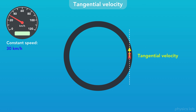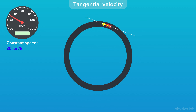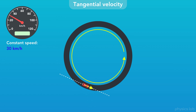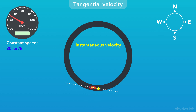You might also hear this referred to as the linear velocity of an object in circular motion, because we're describing the object's velocity along this tangent line at a given instant. From the car's point of view, its motion is being described as if the circular path was straightened out into a line. So while it's fair to say that the direction of the car's velocity is counterclockwise while it's moving, we can also describe the direction of the velocity at a single moment in time — this is what we call the instantaneous velocity.